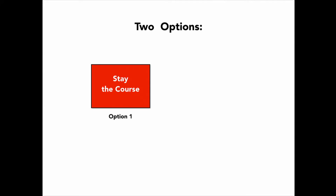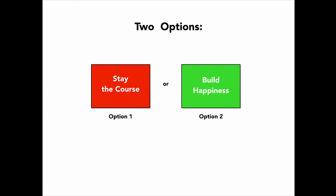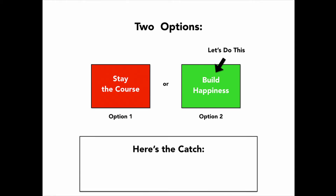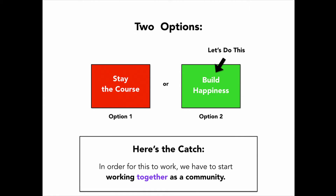We've got two options: we can stay the course with our dysfunctional organizations and growing snowball of usability problems, or we can build happiness — and that is what we do. Let's do this. The catch is that in order for this to actually work, we have to start working together as a community.